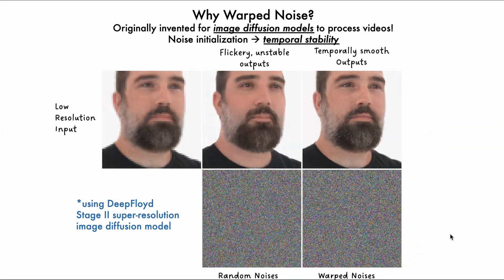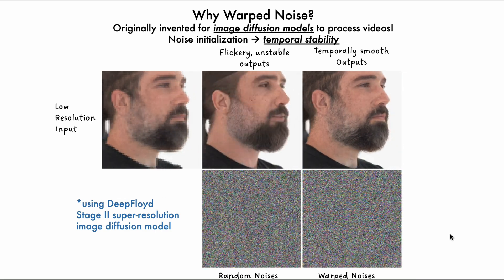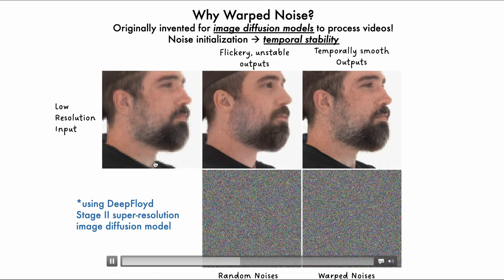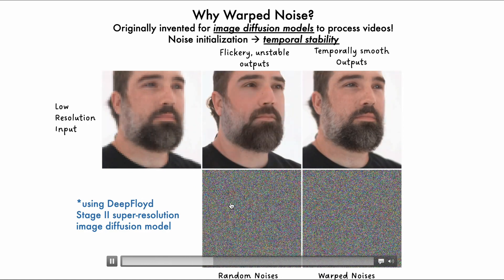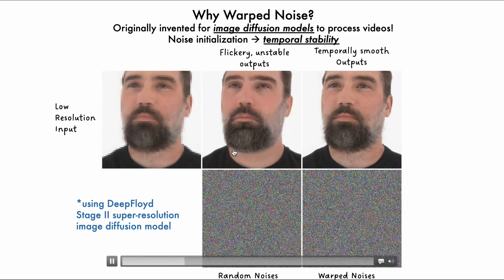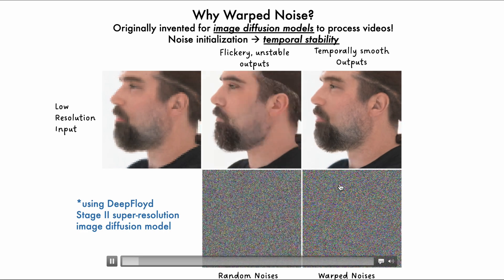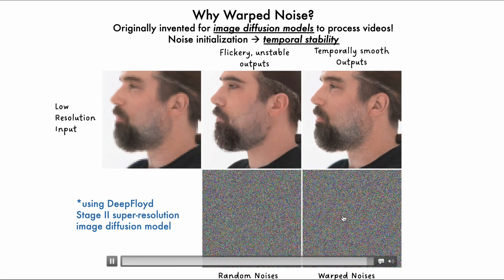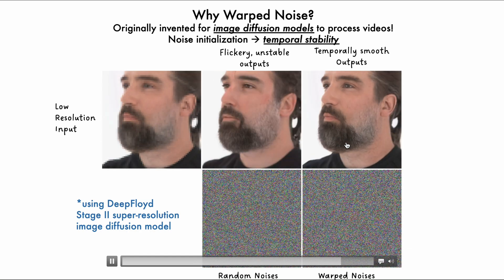This warped noise can be used for image diffusion to create temporally stable results. For example, we have a super resolution model that is being initialized with random noise in the middle, so every frame receives entirely different noise, and the output is extremely flickery from frame to frame because they're all calculated independently. On the right, we use warped noise to initialize the diffusion process, and we can see much more temporally stable results as he moves his head from left to right.